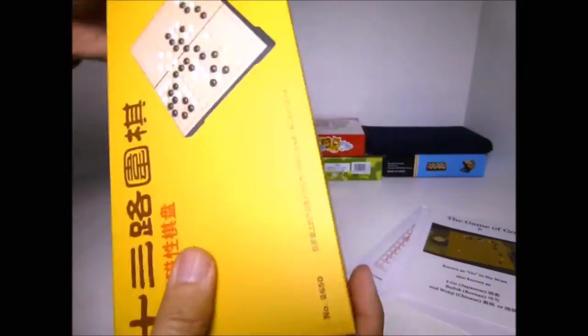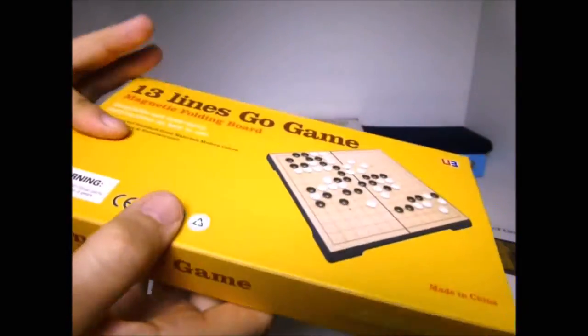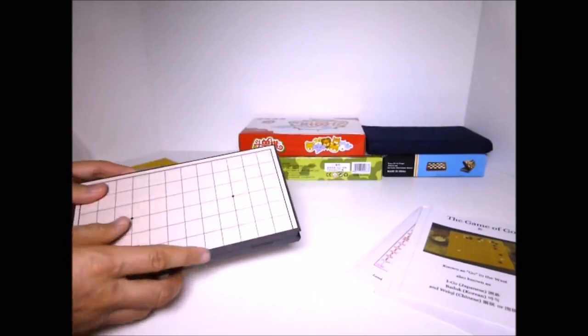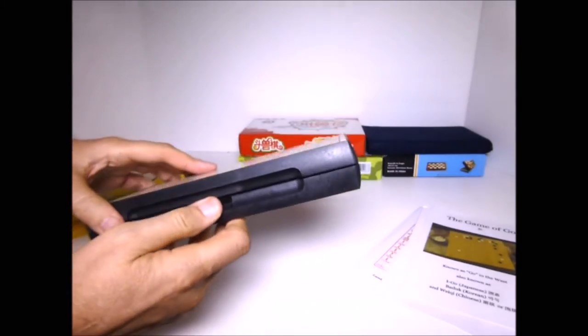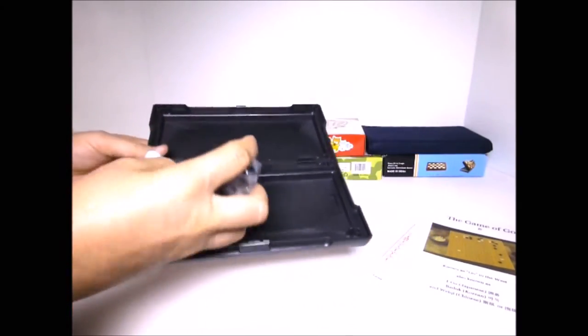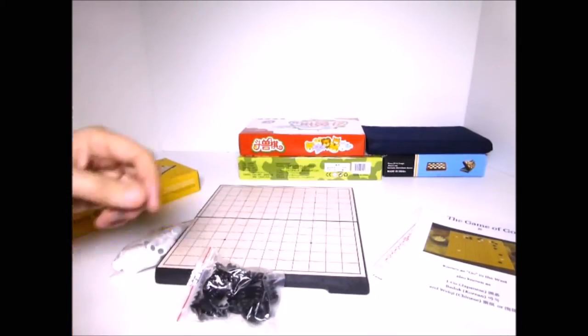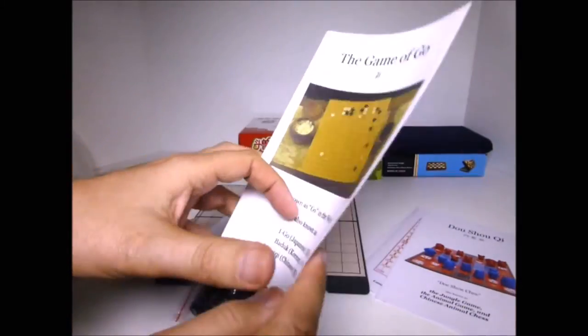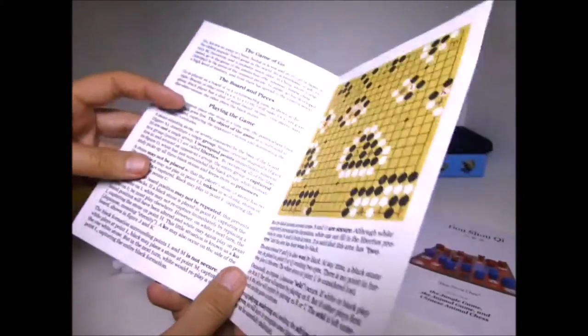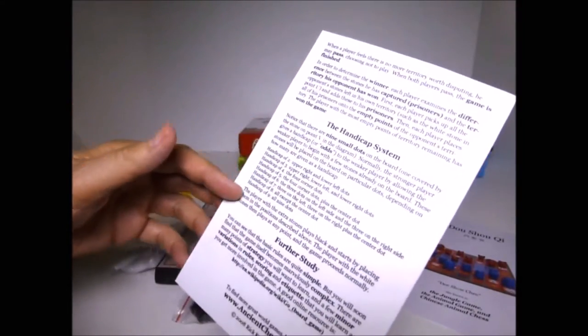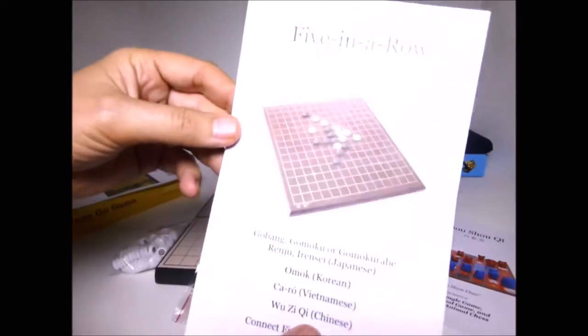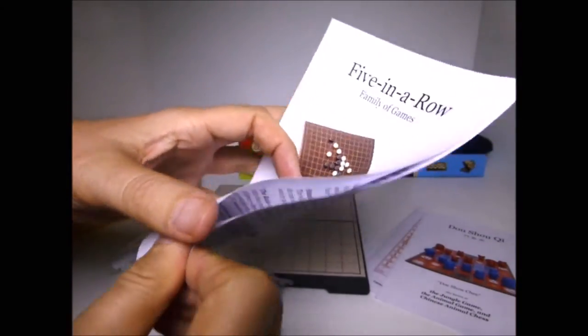Now, the game of Go is the most ancient game that's still played widely in the world. This is a simpler set. The tournament Go board has 19 by 19 lines, creating 361 points. This set has 13 by 13 lines. Here's the booklet. Of course, I have the complete rules of Go very clearly laid out, as I like to do. This is an ancientchess.com production.